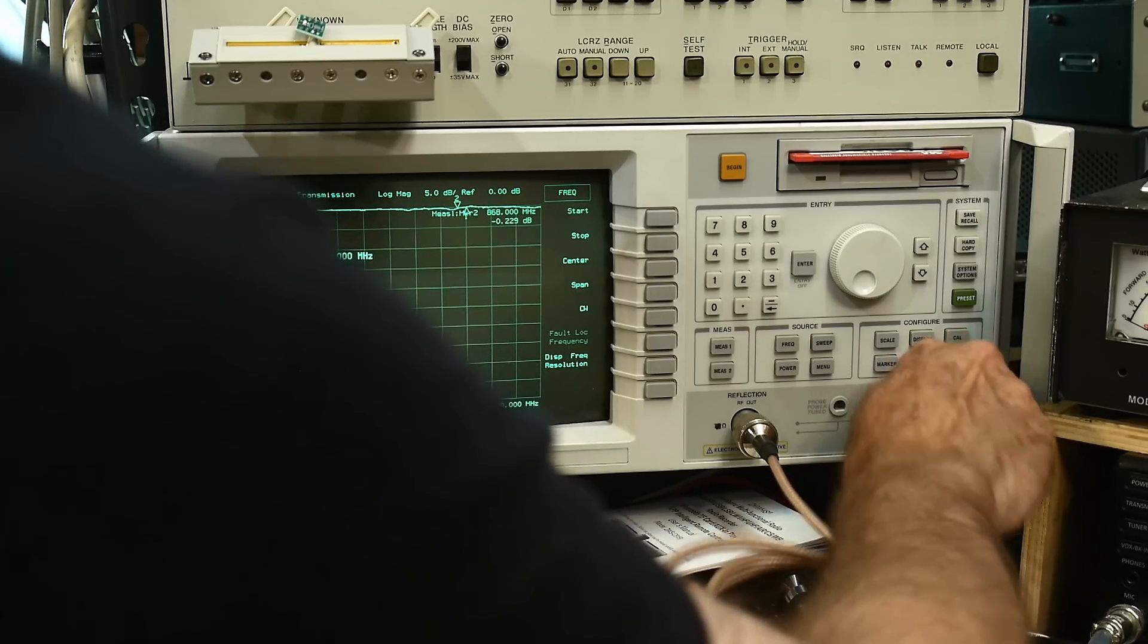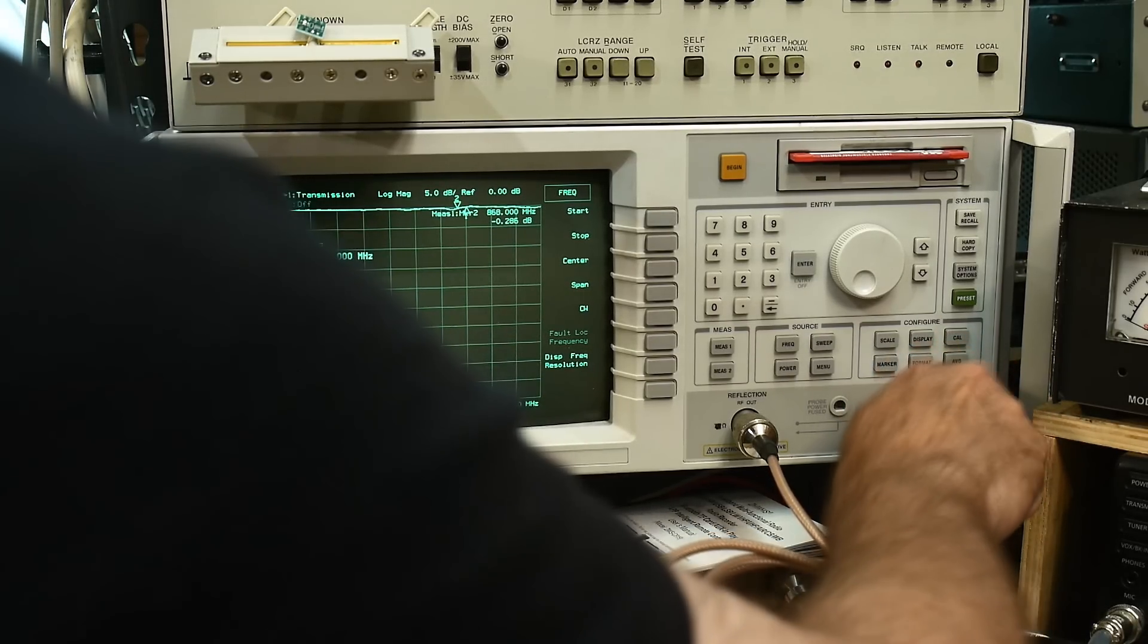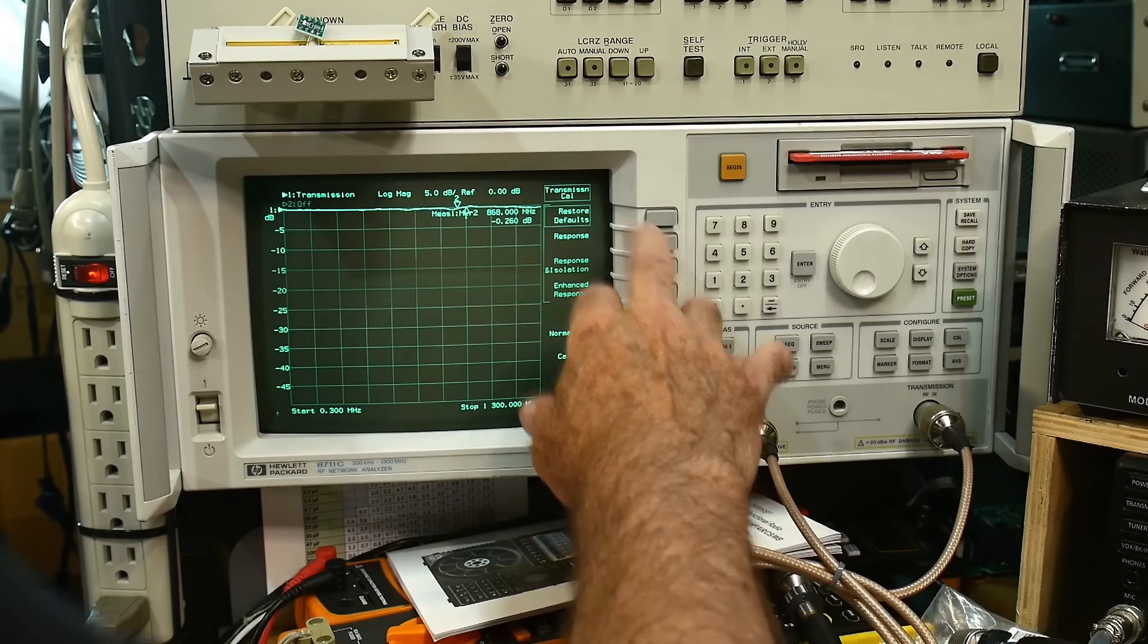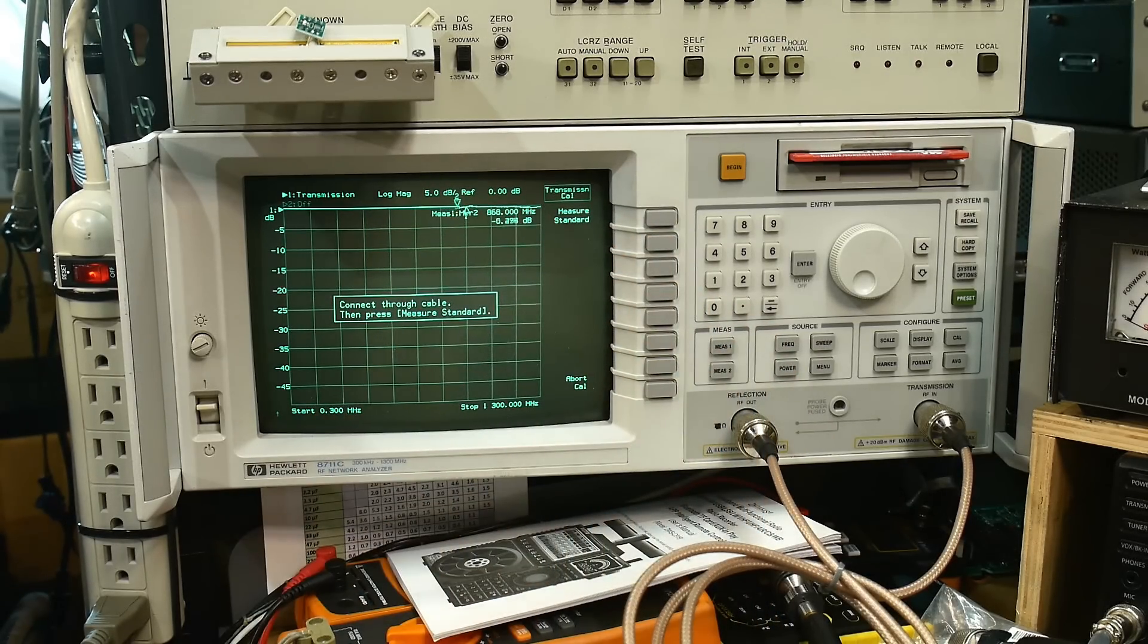Even without a calibration, whatever is in there. Yeah, that looks like it's through. Cal will do a response curve. There we go. It's nice and straight now.